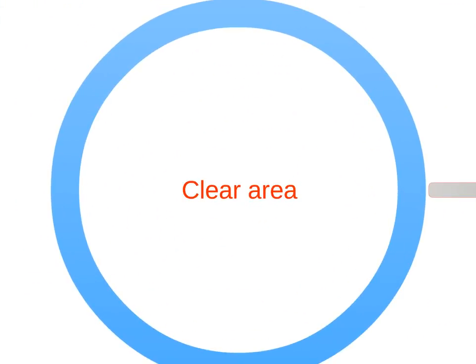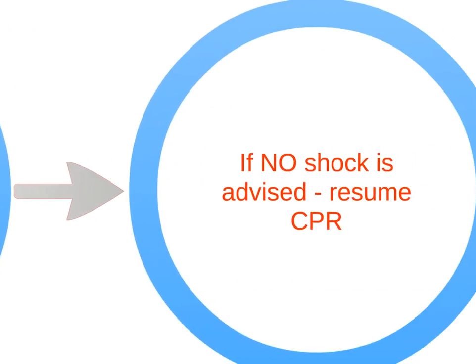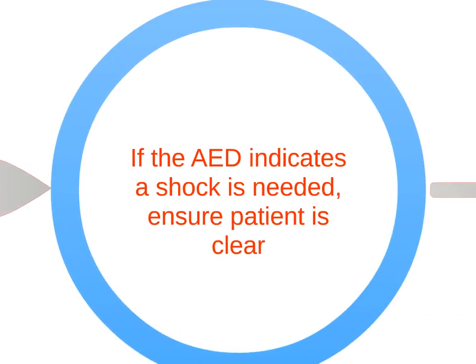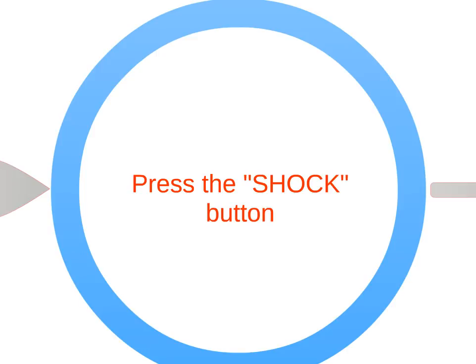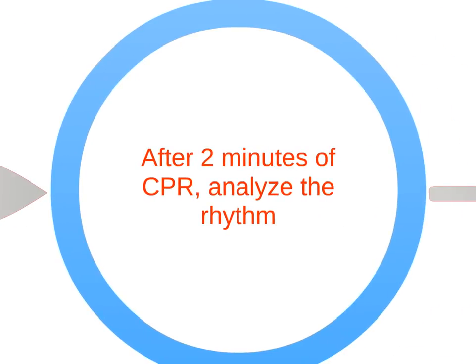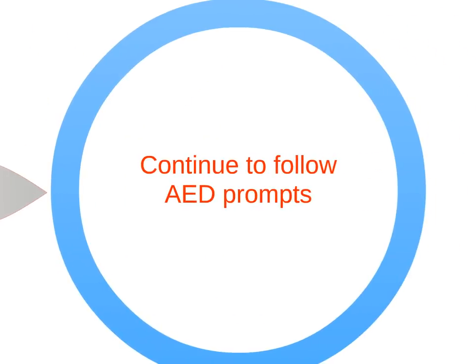Clear the area to allow the AED to read the rhythm. If a rhythm isn't present after 15 seconds, resume CPR. If the AED indicates a shock is needed, ensure the patient is clear, then press the shock button. Immediately resume CPR. After two minutes of CPR, analyze the rhythm with the AED and continue to follow AED prompts.